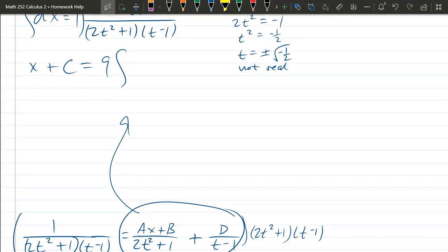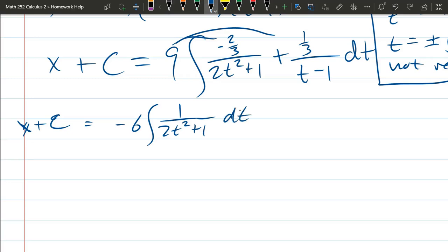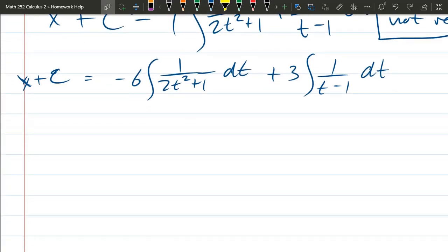So I'm going to just copy that up here. Negative 2 thirds t over 2t² plus 1 plus 1 third over t - 1 dt. x plus c equals, I could distribute the 9 now to get rid of fractions.